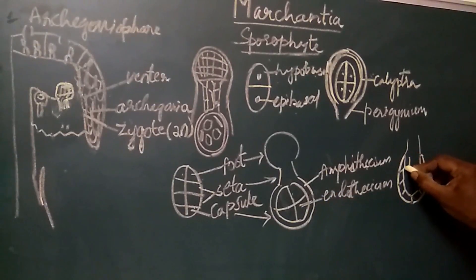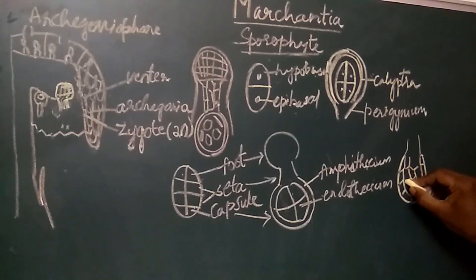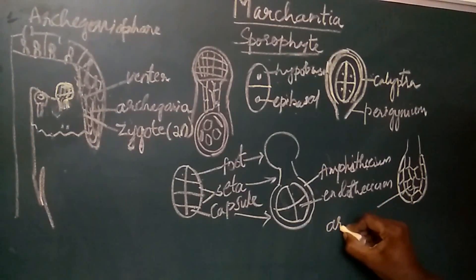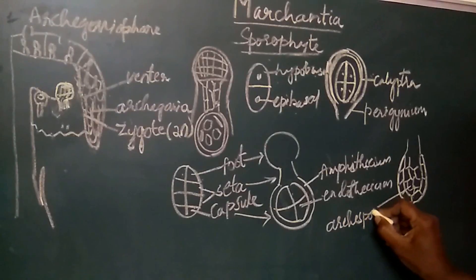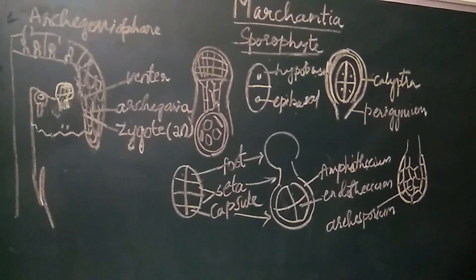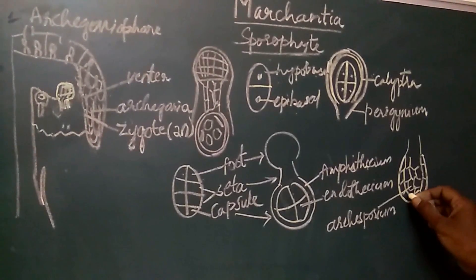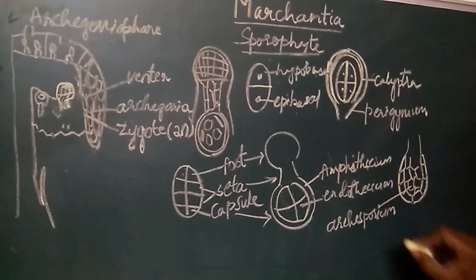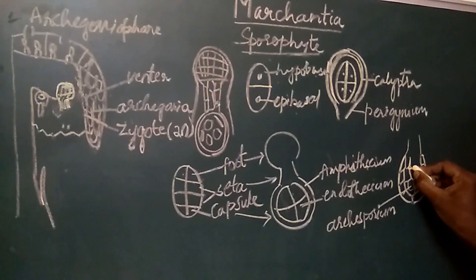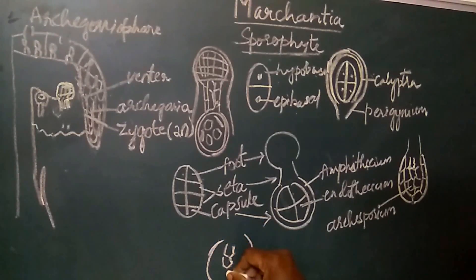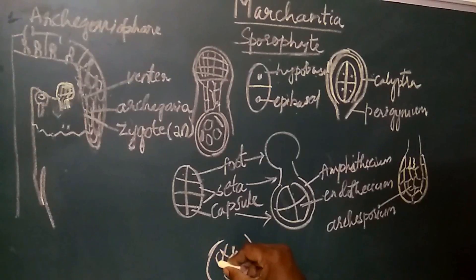The endothesium cells also divide and get differentiated into a tissue called the archesporium. The cells of the archesporium divide and form cuboidal cells arranged in a vertical line. These cuboidal cells are called the sporogenous tissue.